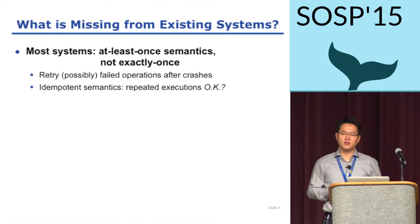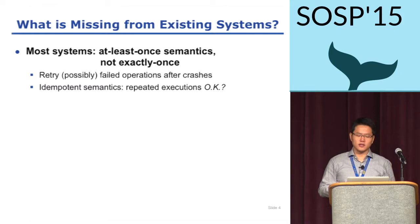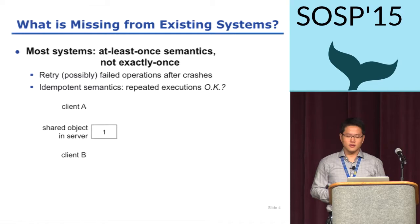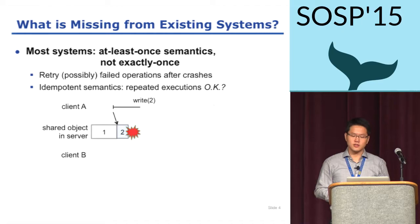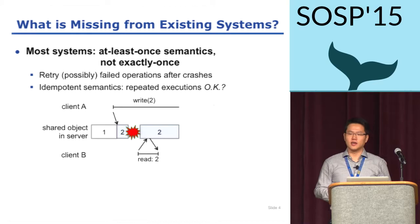However, the repeated execution of an idempotent operation can be problematic with concurrency. Let's see an example. In this example, two clients operate on the same object. Client A writes 2 to the object and the server updates the value to 2 in durable storage, but it crashes just before responding back to client A. After recovery, the object value stays at 2 and client B sees the value of the object as 2.